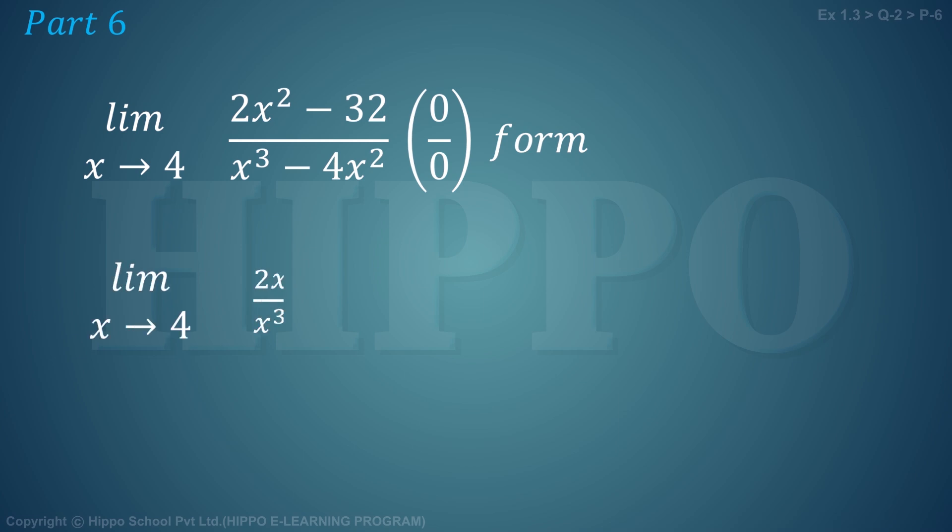Limit as x approaches 4 of (2x² - 32)/(x³ - 4x²) equals limit as x approaches 4. We factor out 2 from the numerator to get 2(x² - 16), and factor x² from the denominator to get x²(x - 4).